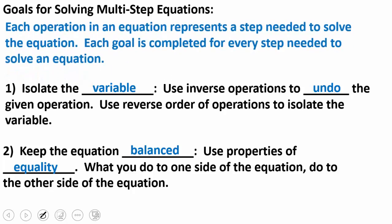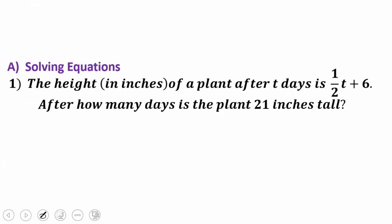So let's just get busy with a couple of things that we need to discuss before we do our first example. It says each operation in an equation represents a step needed to solve the equation. So each goal is completed for every step needed to solve. There's your essential question right there. The first two examples are going to be just what we've done before with one slight exception. We're going to have word sentences that we have to mark text and write an equation.